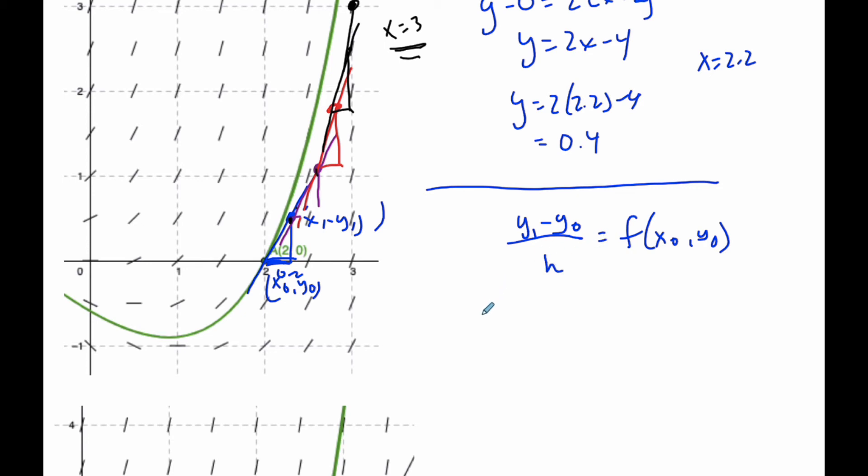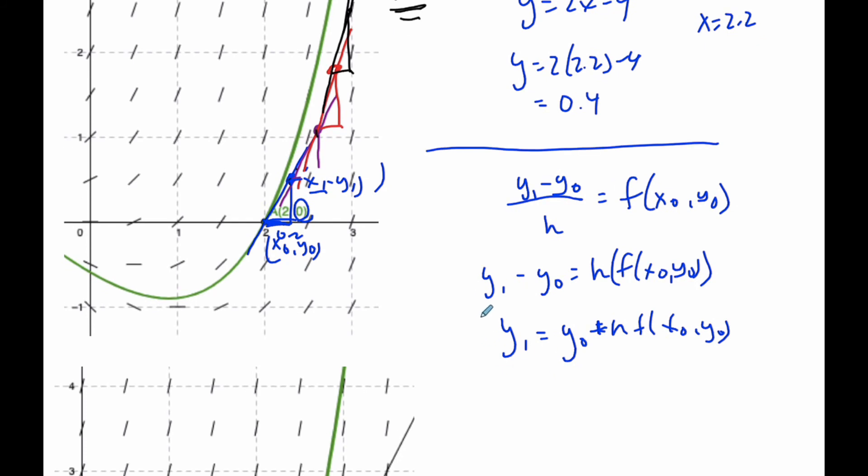If I do a little algebra, multiplying by h: y1 minus y0 equals h × f(x0, y0). Then y1 is simply y0 plus h × f(x0, y0). This here is just a formula that will get me y1. I know y0, but do not know what this y1 would be. I would know the x1, but not the y1.